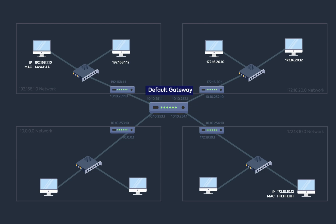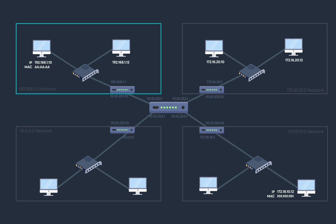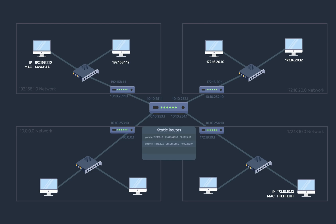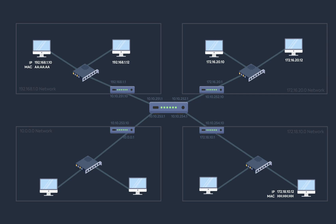Since the network routers depend entirely on the center router, the center router must know about every subnetwork. To achieve this, we add static routes. For example: any packet for 192.168.1.0/24 should be forwarded to this interface; any packet for 172.16.20.0/24 should be forwarded to this interface; and so on for other networks. Note that we don't need to add routes for networks directly connected to the center router, since it already knows about them. The goal of adding routes is to inform the router where a network is located.